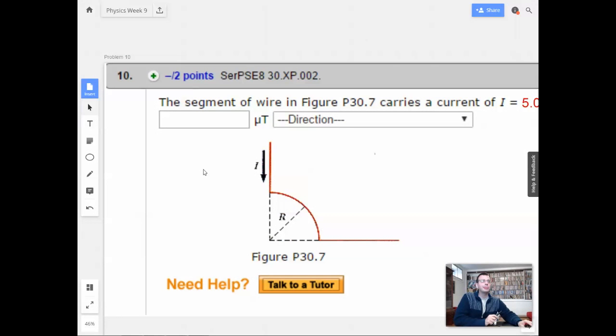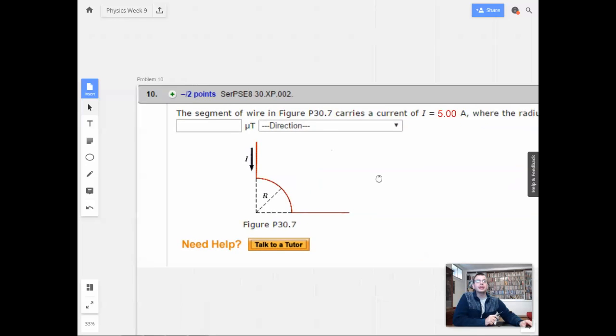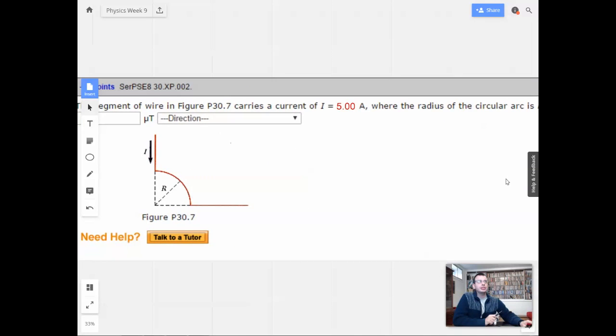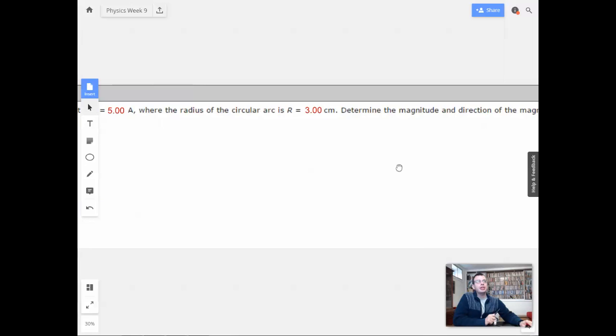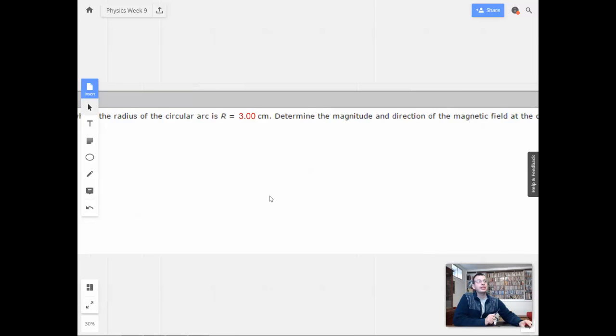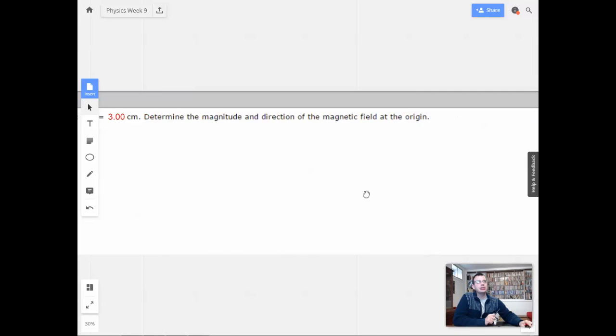Week 9, problem 10. A segment of wire in the figure below carries a current of 5 amps, where the radius of the circular arc is 3 centimeters. Determine the magnitude and direction of the magnetic field at the origin.